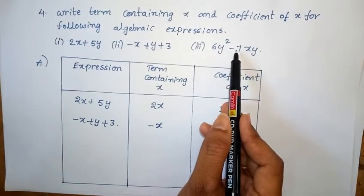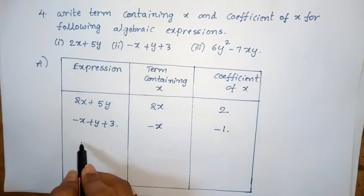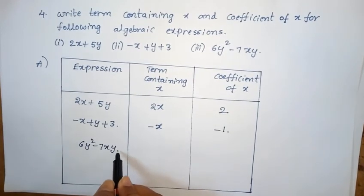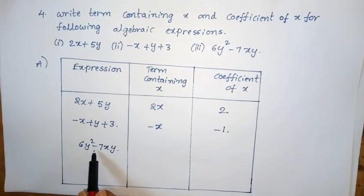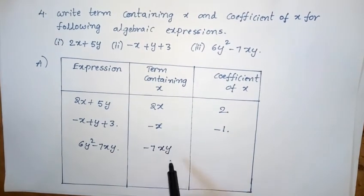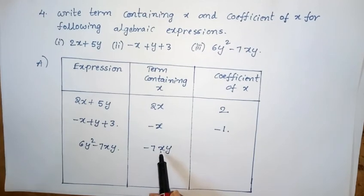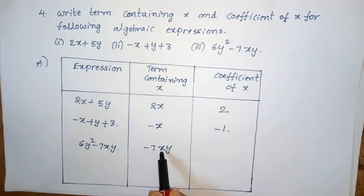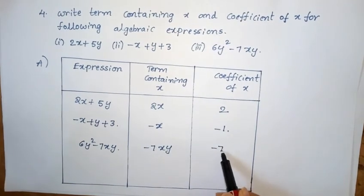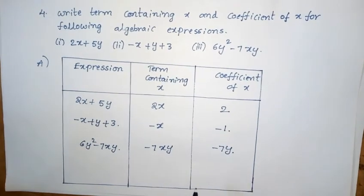Third expression: 6y² minus 7xy. The term containing x is minus 7xy. By removing x, we get minus 7y. So minus 7y is the coefficient of x. This is the solution for the fourth problem.